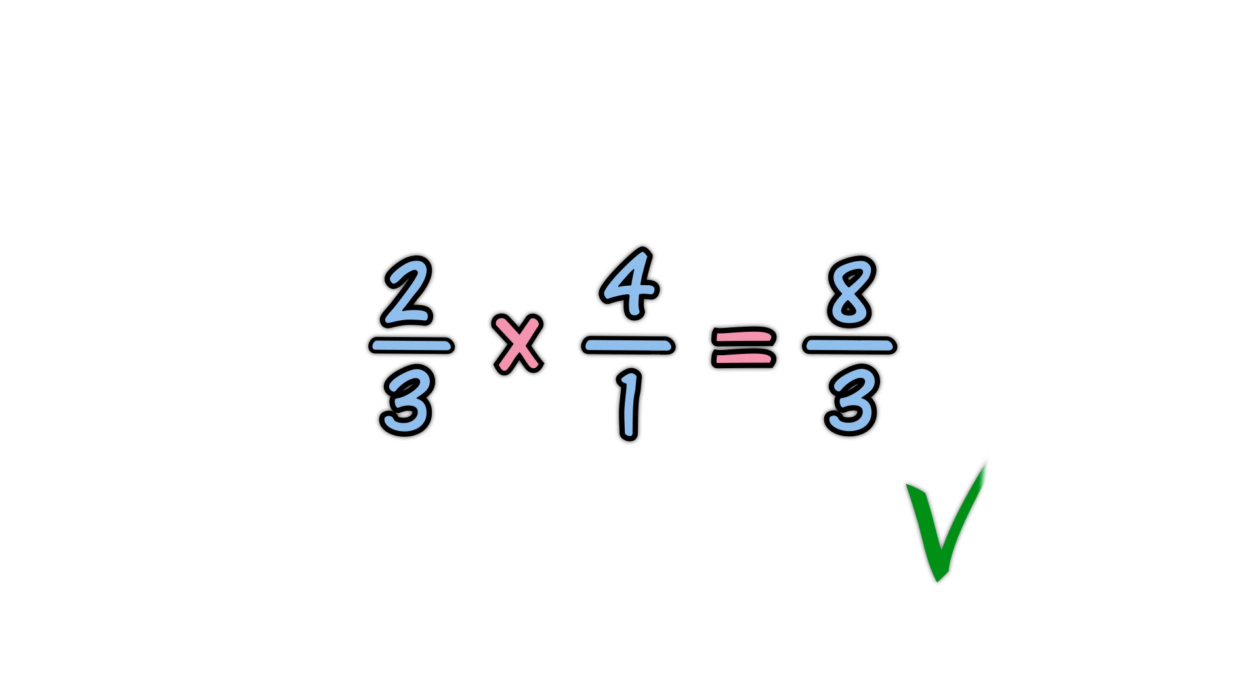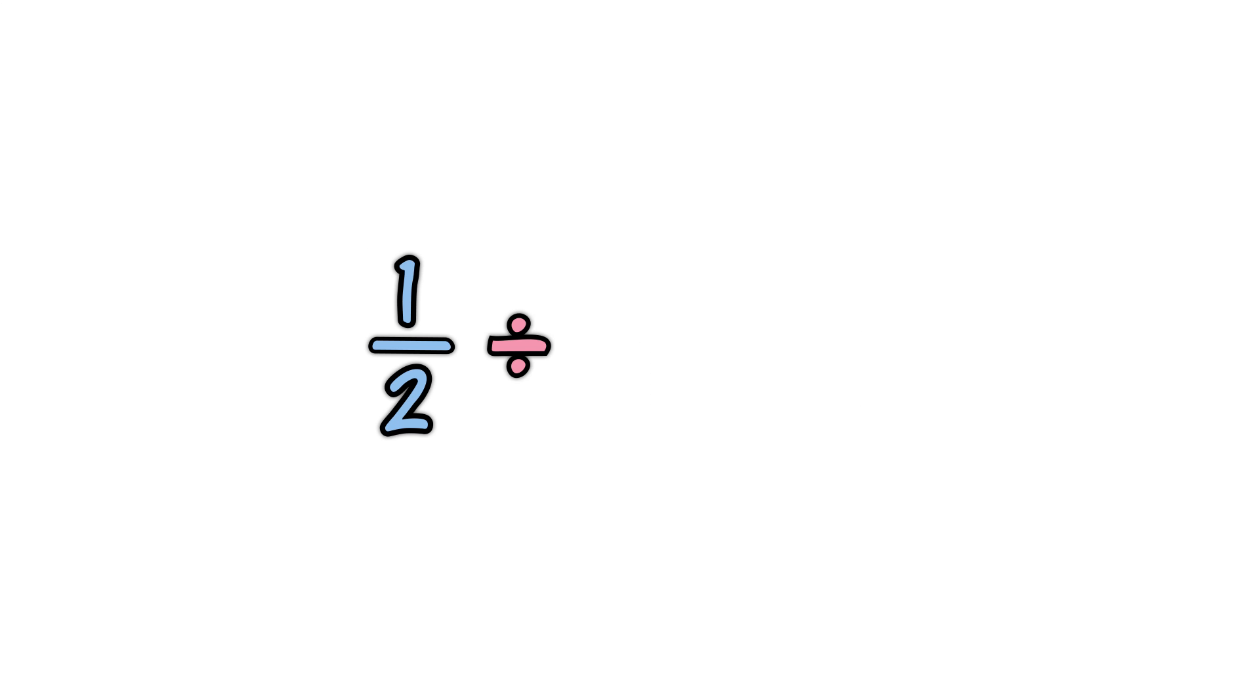Here is another example. A half divided by one-sixth. Turn the second fraction upside down, it becomes a reciprocal. One over six becomes six over one. Multiply the first fraction by that reciprocal. The result is six halves.